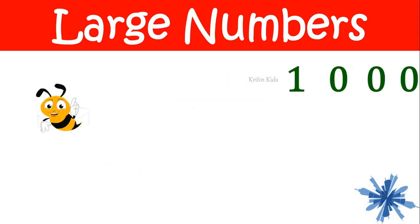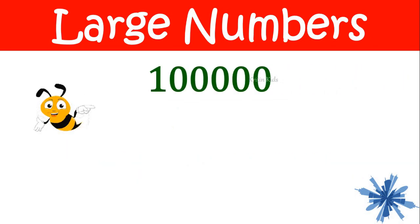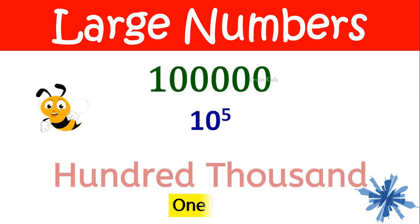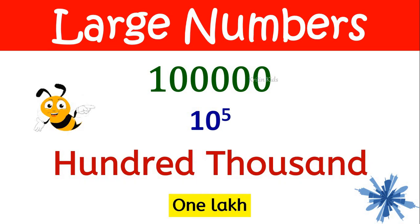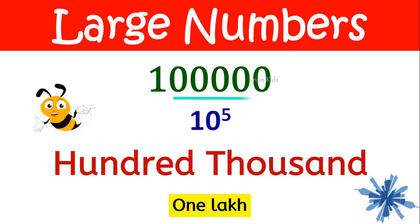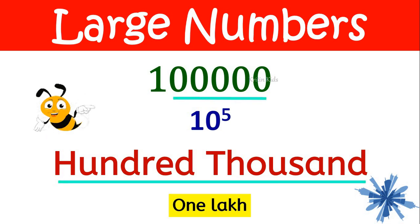Now we will add one more zero — this becomes hundred thousand, which is also called as one lakh. That is one followed by five zeros is hundred thousand.